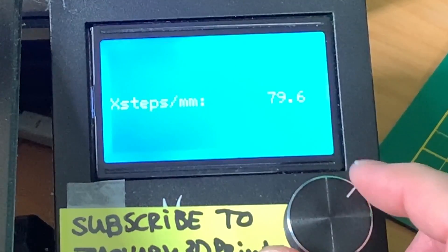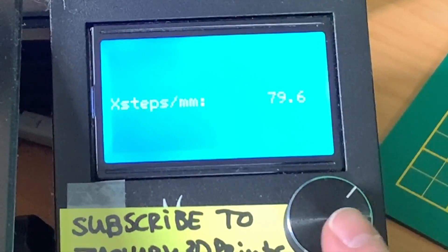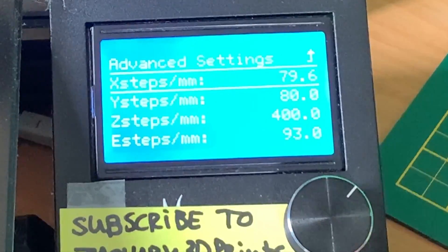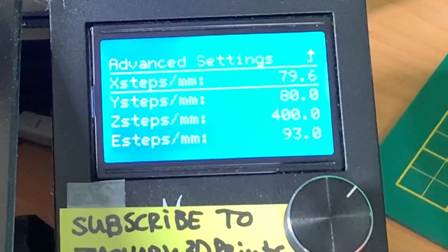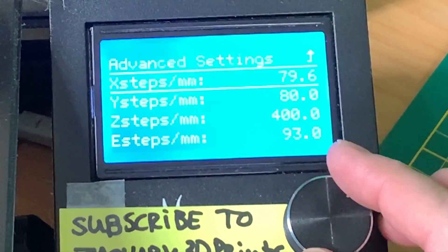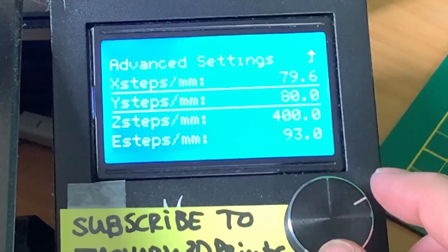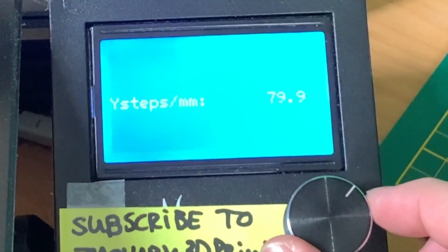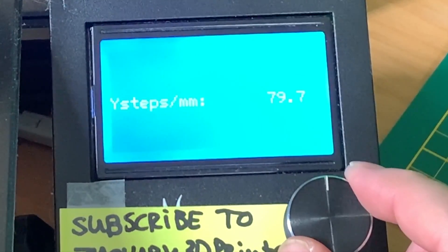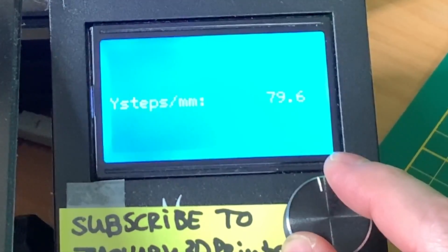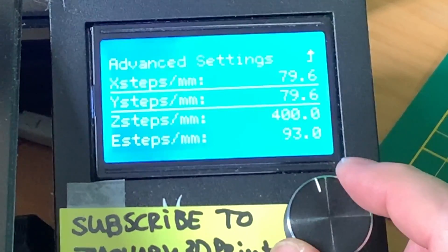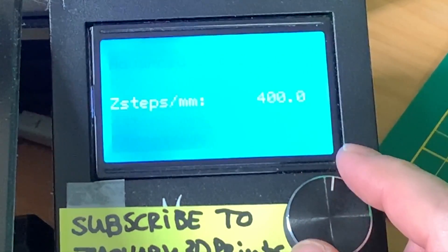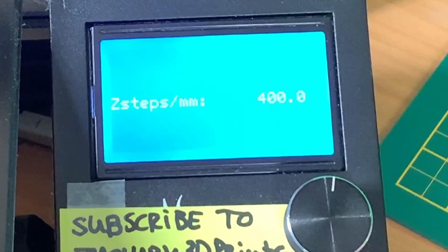Now we do the same by the Y, 80. We dial a little bit down, it's not that much. Then we press the knob, and for the Z step we are going to go to 402. This is a little bit more.